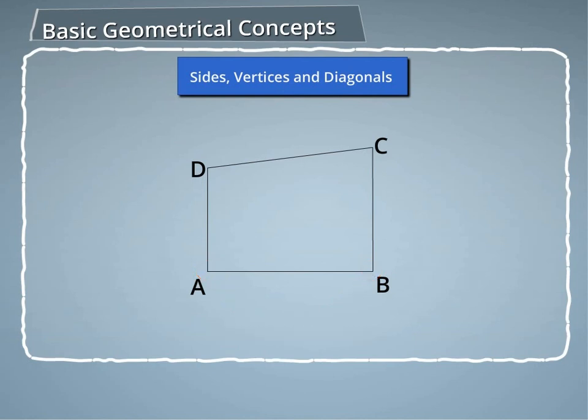The line segments AC and BD are diagonals of the polygon ABCD.